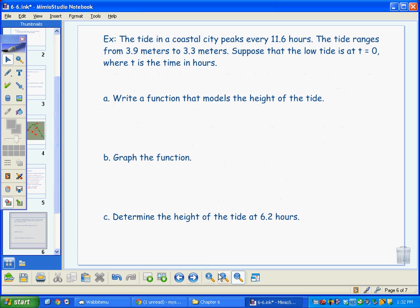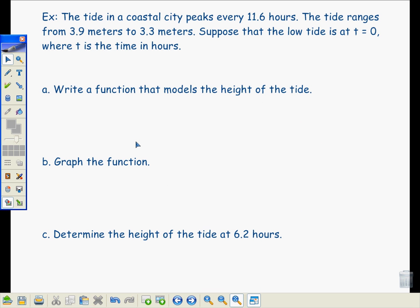Lastly, we took a look at a problem type that will be on our test, and this has to do with the classic tide problem for a coastal city. And I'm saying the tide in a coastal city peaks every 11.6 hours. The tide ranges from 3.9 meters to 3.3 meters. Suppose that the low tide is at time equals zero, where t is in time in hours. Now, you can go right for the function, the algebraic function that models the height of the tide. But I always like to start with a picture, and I'm going to ask you for the graph of the function anyway. So let's just start with the graph. So I'm going to create a picture, that being the graph, of the situation.